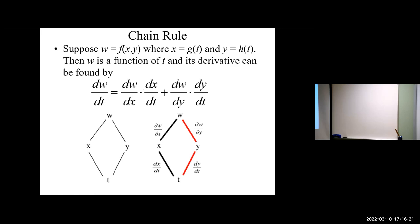Sometimes you'll see these tree plots go along with the chain rule, and they're literally just to help you make sure you've made all the proper derivatives. The way they work: w is your initial function. w is a function of x and y, so those go at the second level. x and y are functions of t, so that goes down at the third level. Let's do an example to show how this diamond works, and then we'll look at a couple other options.